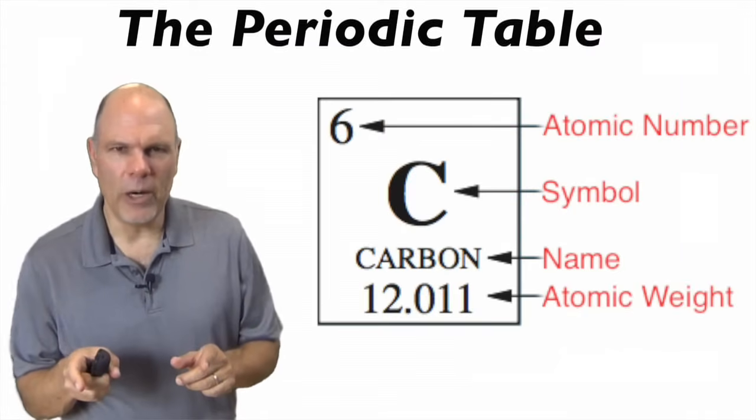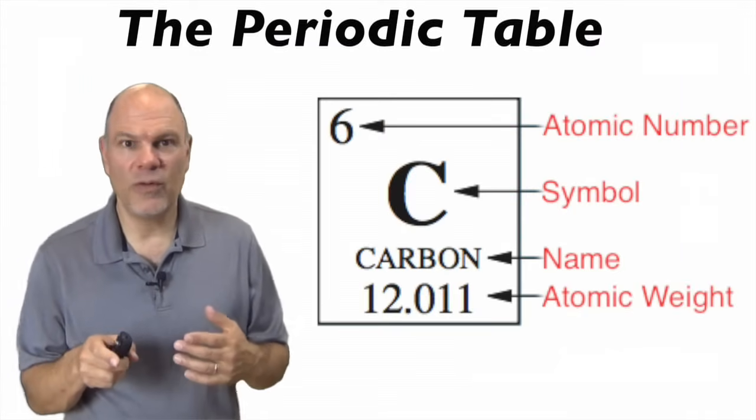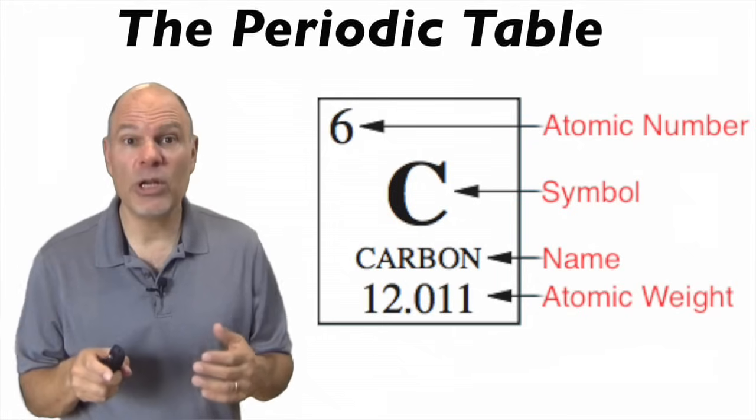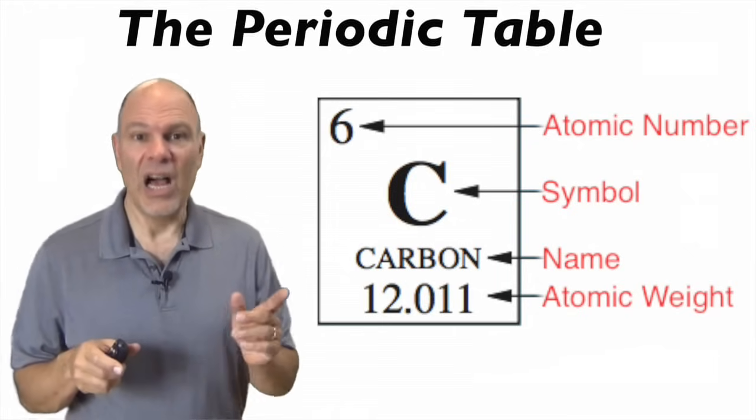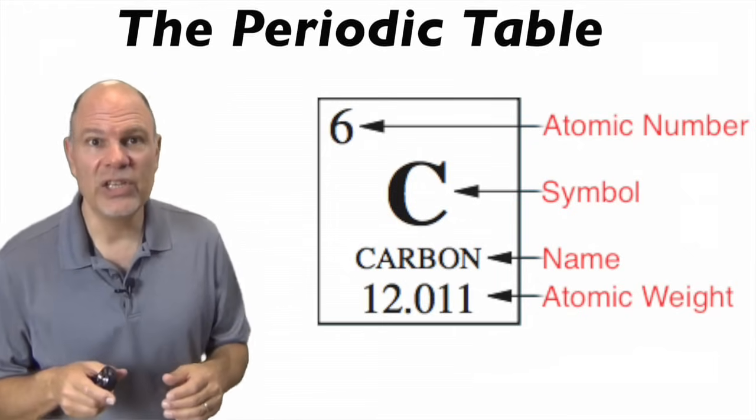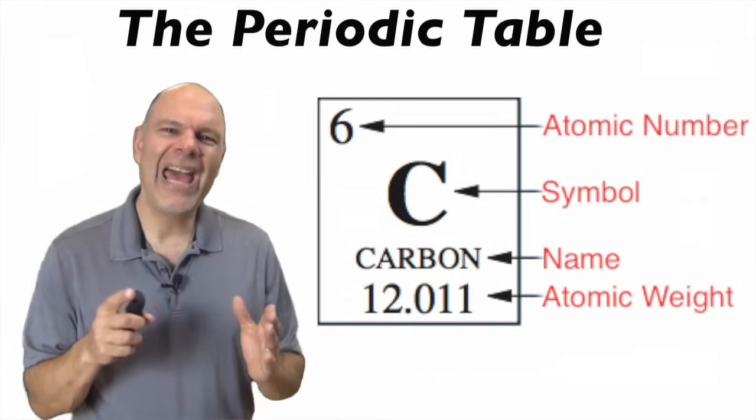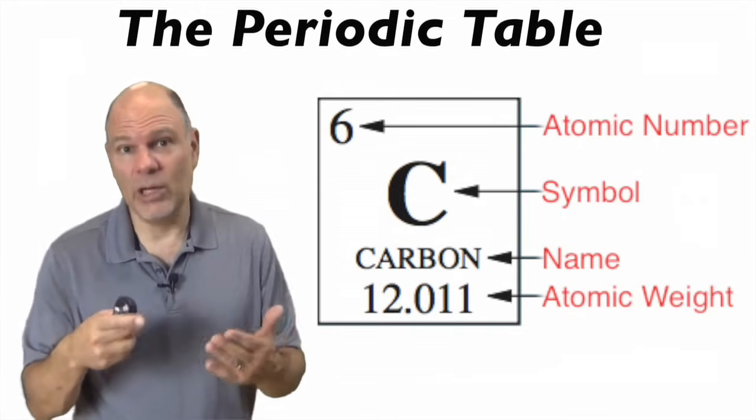Each element has its own square, and within that square you can find the atomic number. The atomic number is the number of protons, a chemical symbol, which we just discussed, the name of the element, and the atomic weight, which is exactly what it sounds like.